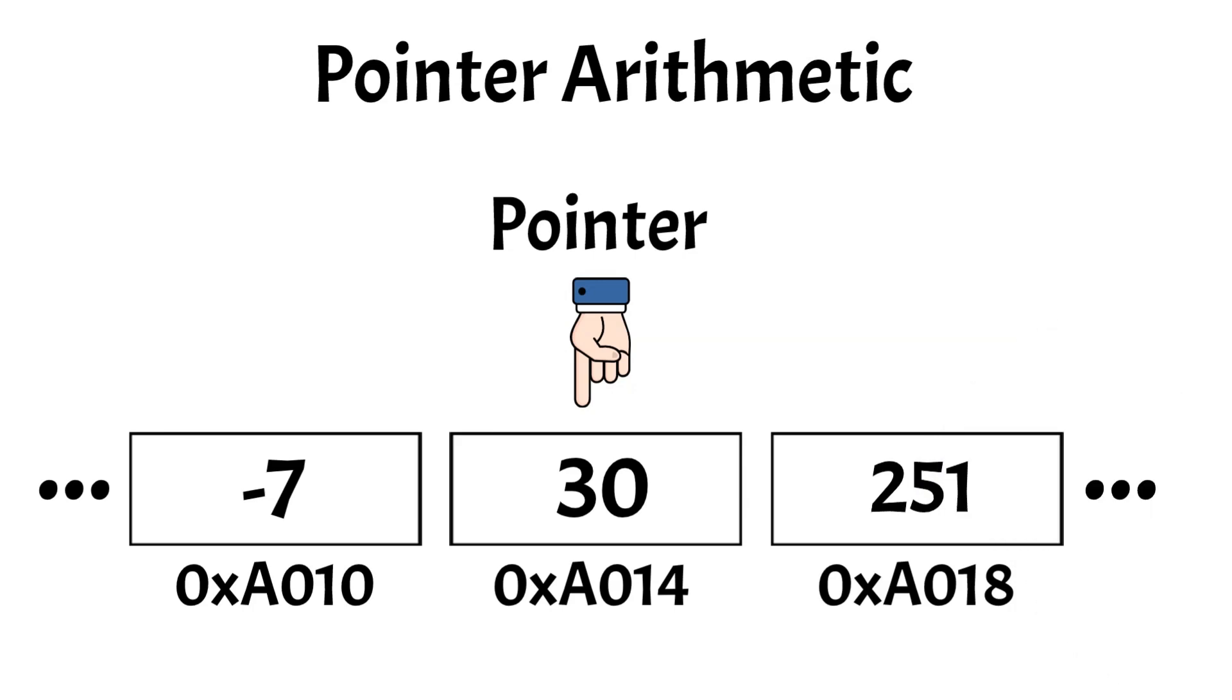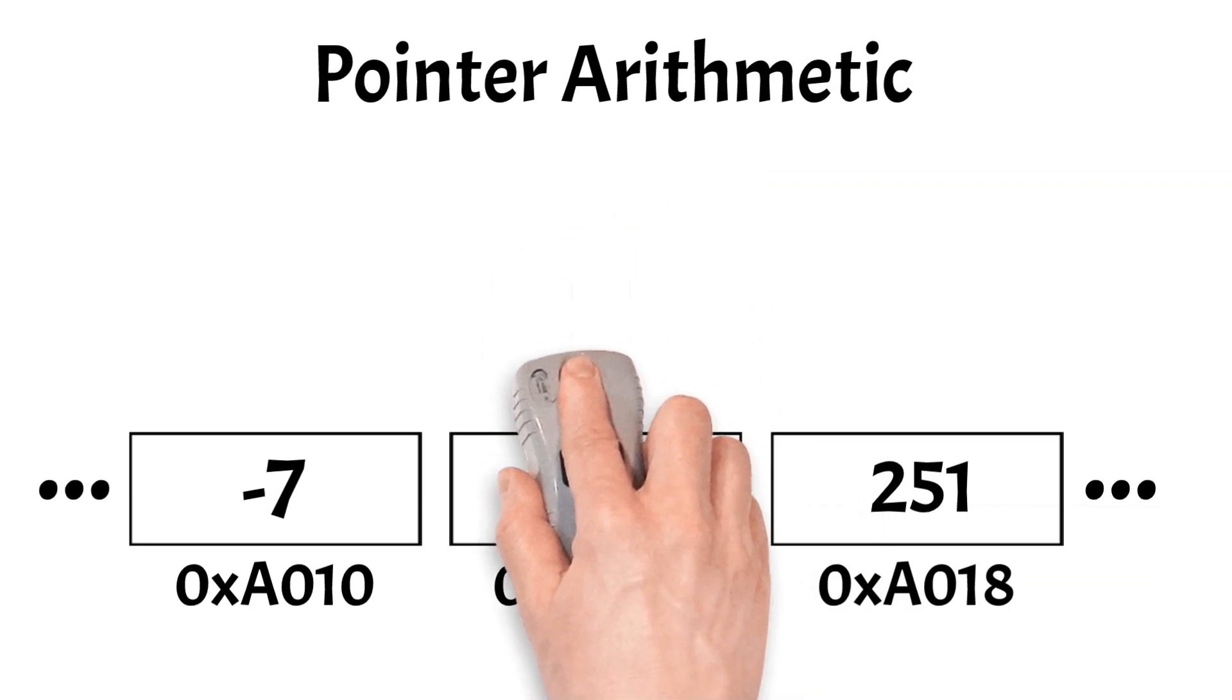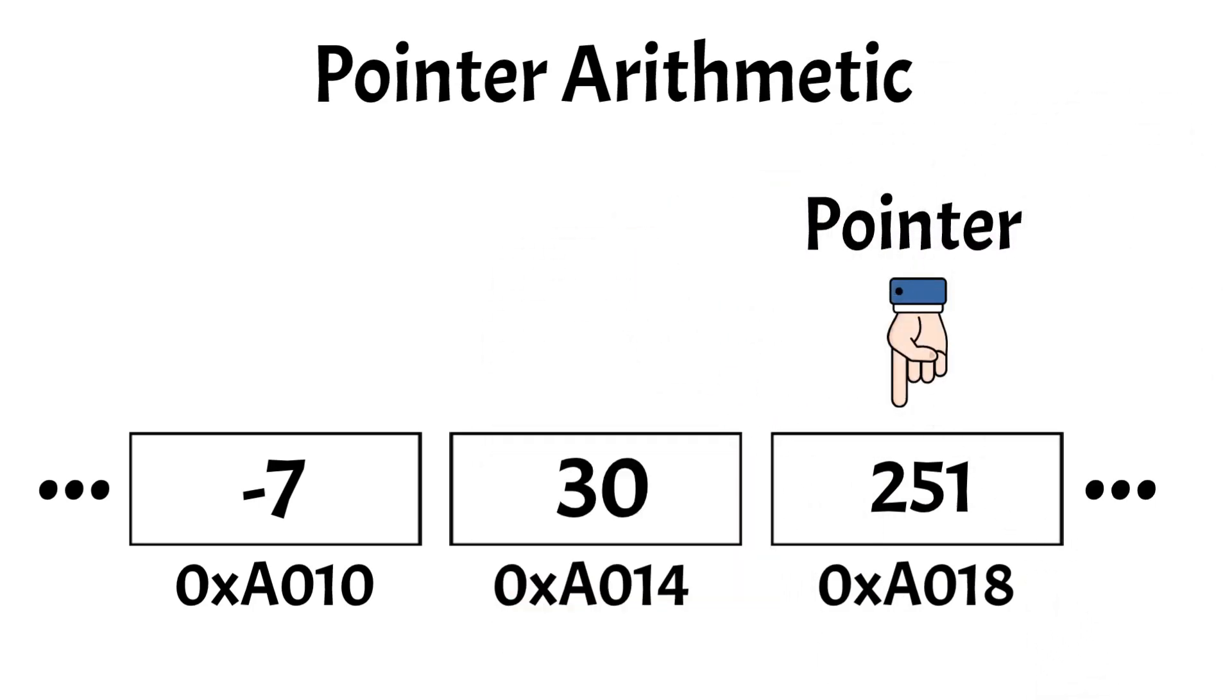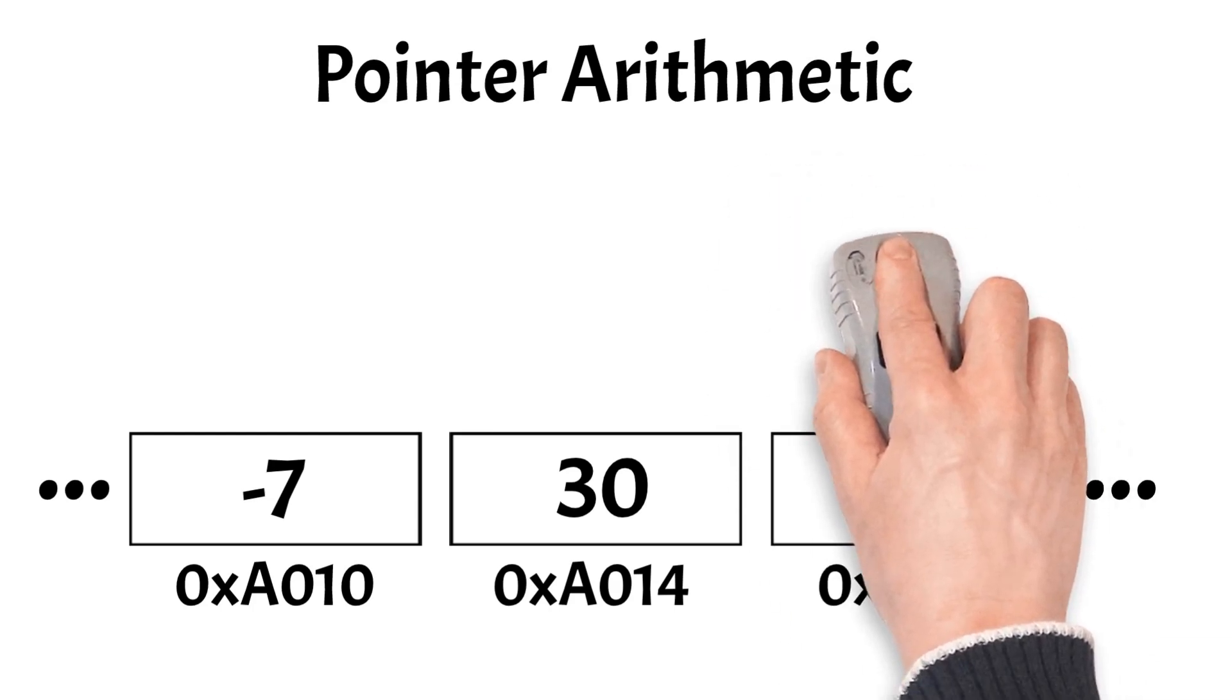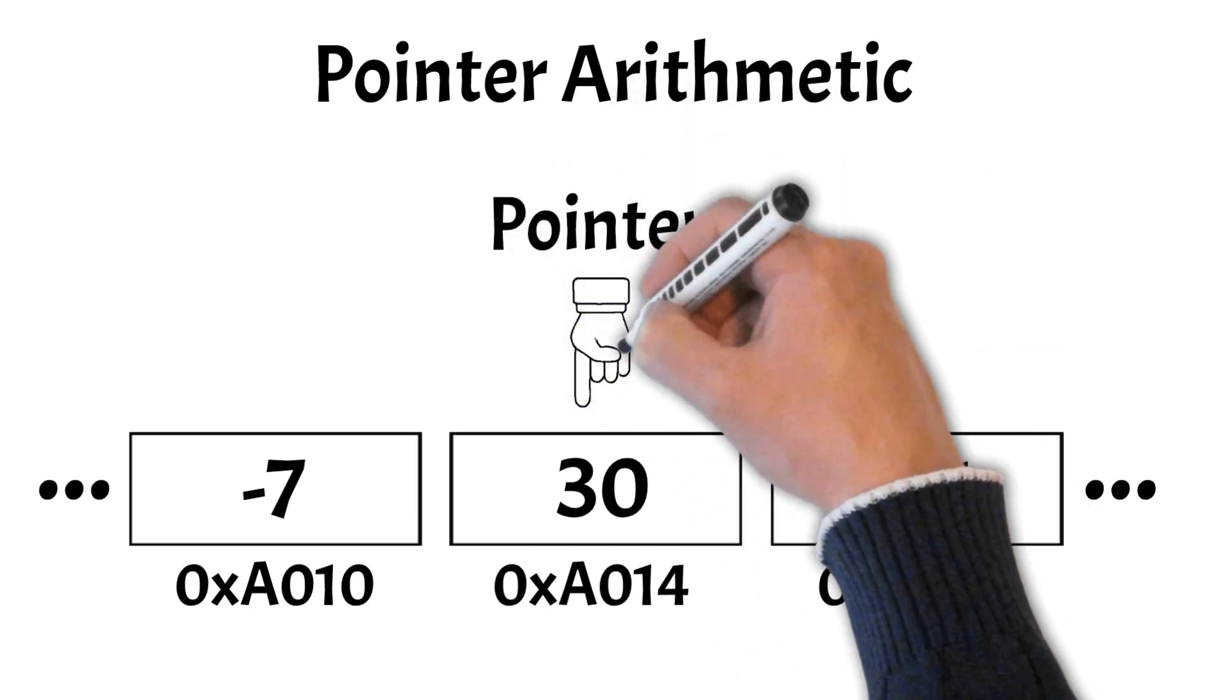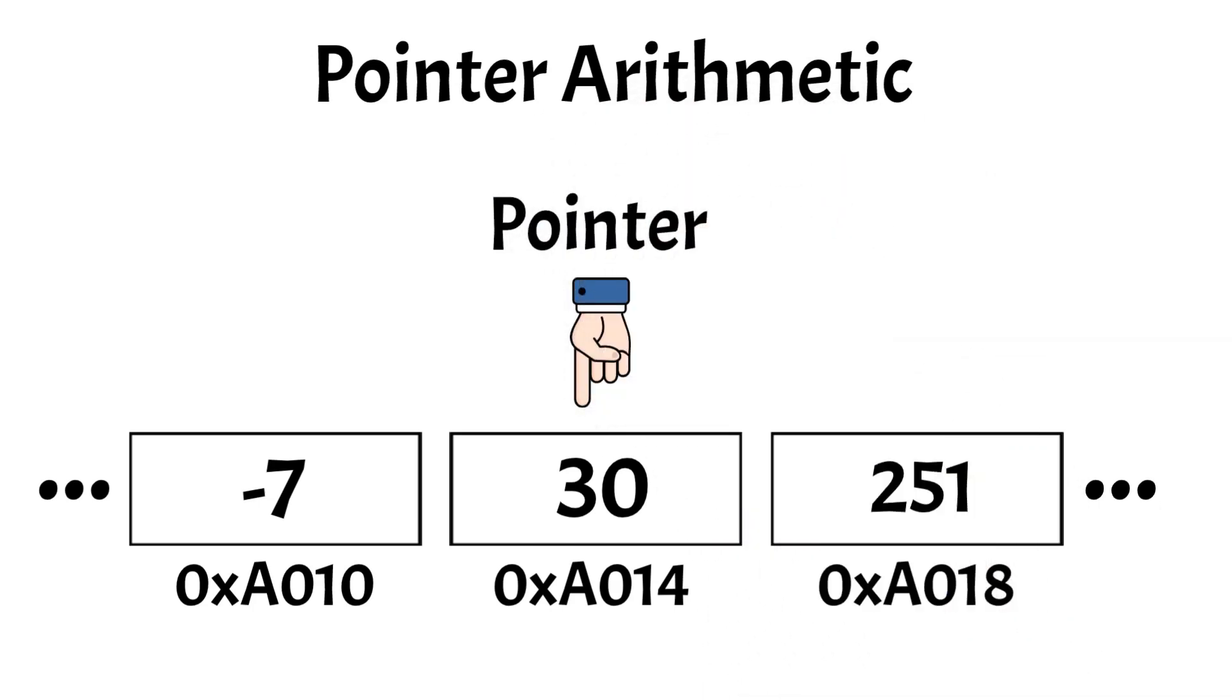You can think of memory as a long tape with addresses on each segment. Our pointer points to this specific location, and if we increment it, the pointer will move to the next memory address, which could contain a completely different value or even be uninitialized. If we decrement the pointer, it returns to its original position. Pointer arithmetic allows us to navigate through memory efficiently, especially when working with arrays and other data structures.